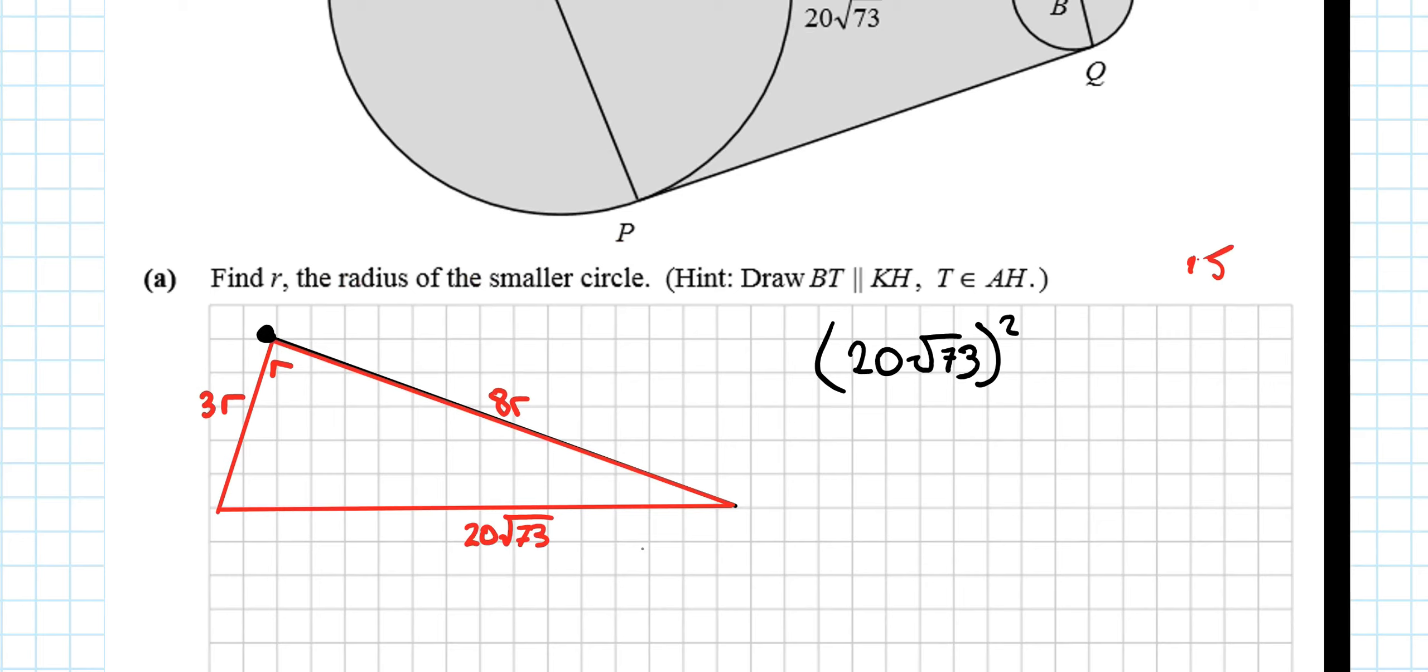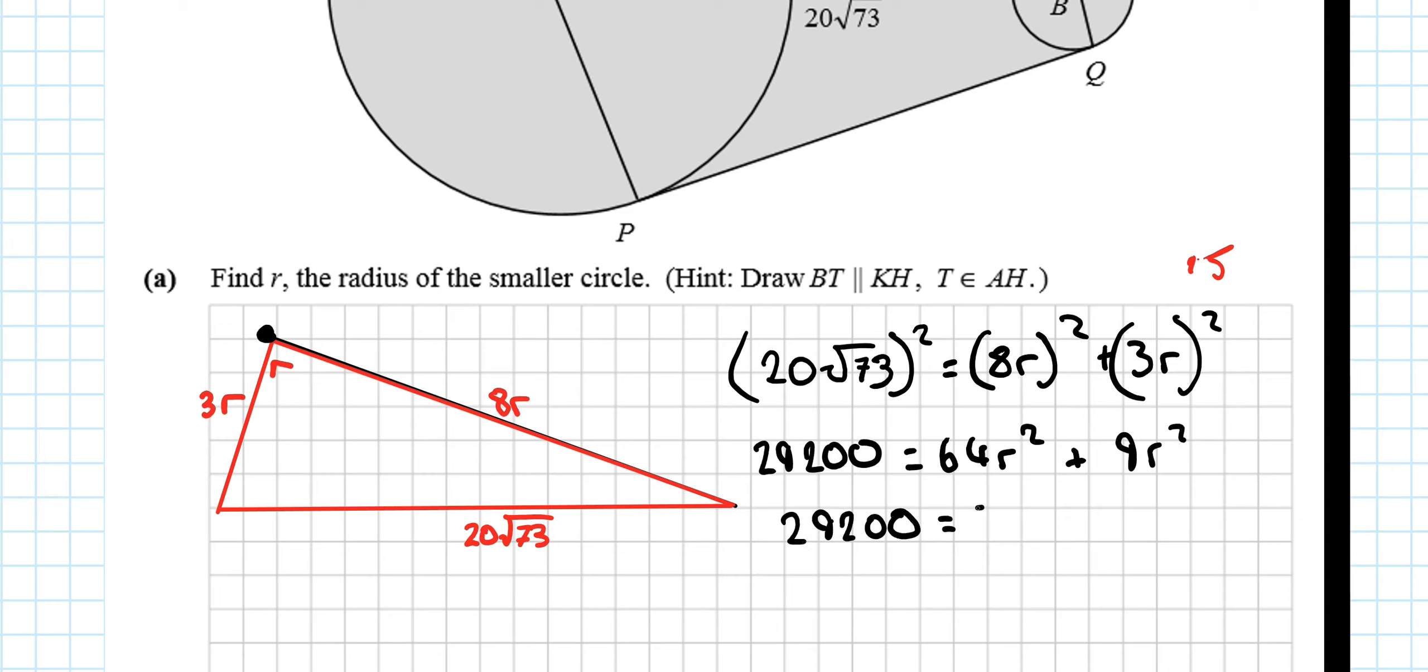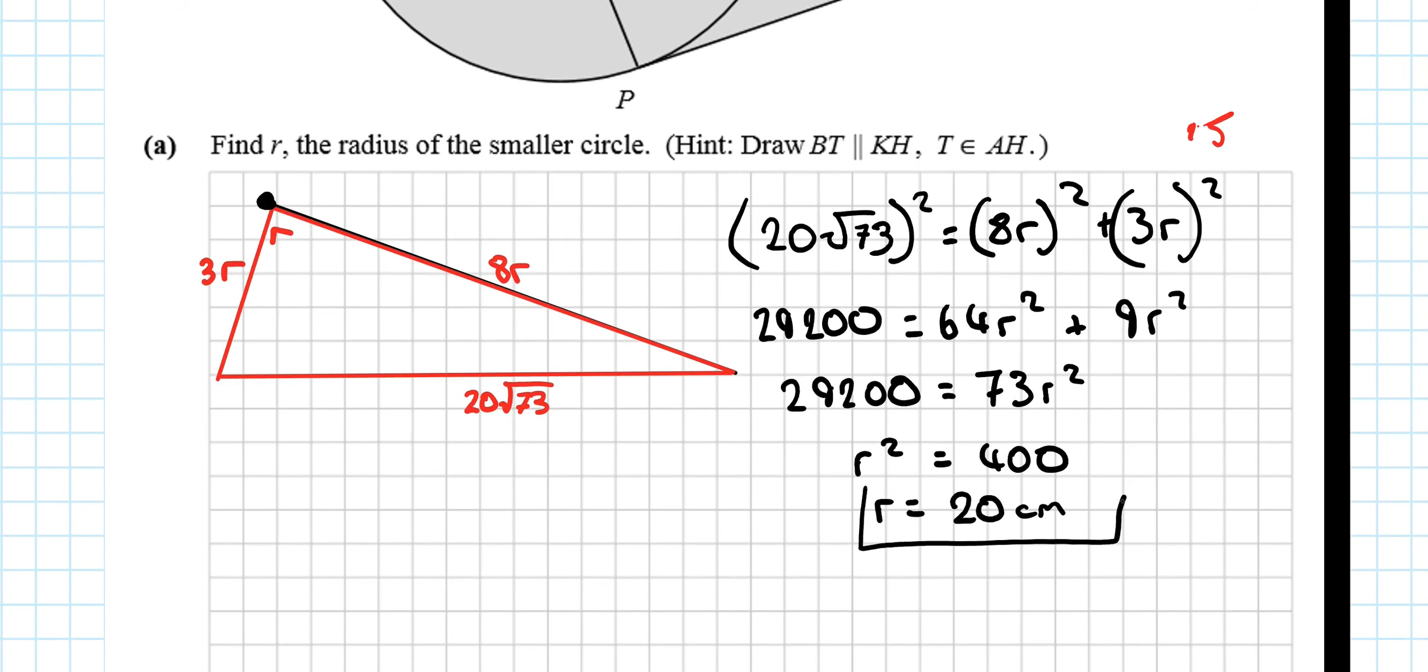So it should obey the hypotenuse here, opposite the right angle. The hypotenuse squared is equal to the sum of the other two sides squared. So, 20 root 73 squared equals 8r squared plus 3r squared. Start to multiply it out. 20 root 73 squared is 29200. 8r squared is 64r squared. 3r squared is 9r squared. 29200 equals 73r squared. 400r squared equals 400. And that's really nice, because r is the square root of that, which is 20. Have they talked about units? Be careful. They have at centimeters. Centimeters for 15 marks.